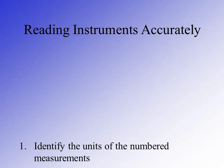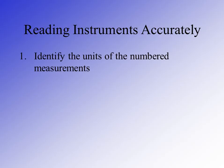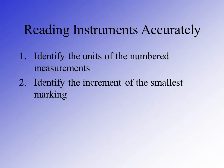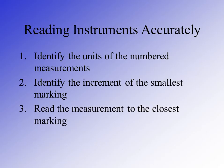When we read an instrument, in order to read it accurately, first we need to look at the instrument itself — more specifically, the markings on the instrument. We need to determine the units of the numbered measurements. Whatever the scale is, look for the units: are they centimeters, milliliters, grams, kilograms? Once you've identified the units, look at the spacing of those markings and identify what the increment is between marks.